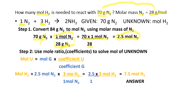Now we know 2.5 moles of nitrogen, so we can solve for the unknown. Moles of H₂ = 2.5 mol N₂ × (3 mol H₂ / 1 mol N₂). Canceling moles of nitrogen gives 2.5 × 3 / 1 = 7.5 moles of hydrogen, which is the answer. If the problem were asking for grams of hydrogen, you would then multiply this mole value by the molar mass of hydrogen.